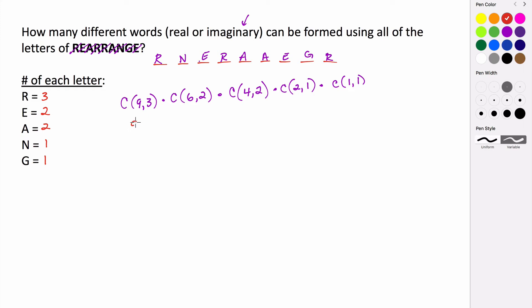So we have 9 factorial divided by 9 minus 3, which is 6 factorial times 3 factorial, times 6 factorial over 6 minus 2, which is 4 factorial times 2 factorial. We have 4 factorial divided by 4 minus 2, which is 2 factorial times 2 factorial.